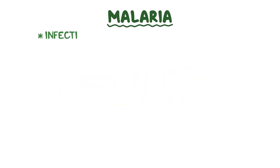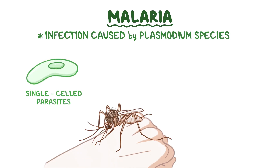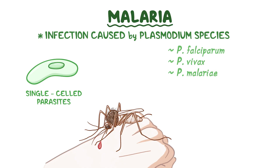Malaria is an infection that can be caused by a few different types of plasmodium species, which are single-celled parasites that are spread by mosquitoes. There are hundreds of types of plasmodium species, but the five that cause malarial disease in humans are plasmodium falciparum, plasmodium vivax, plasmodium malariae, plasmodium ovale, and plasmodium knowlesi.